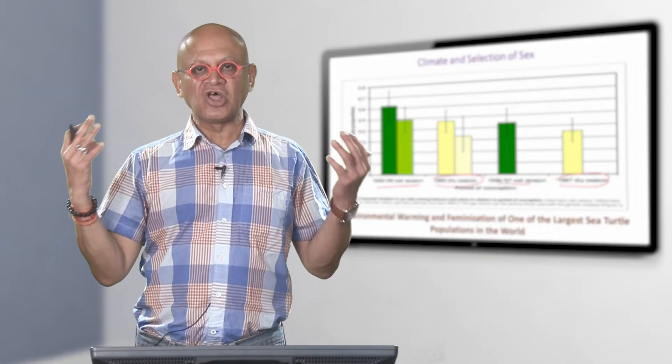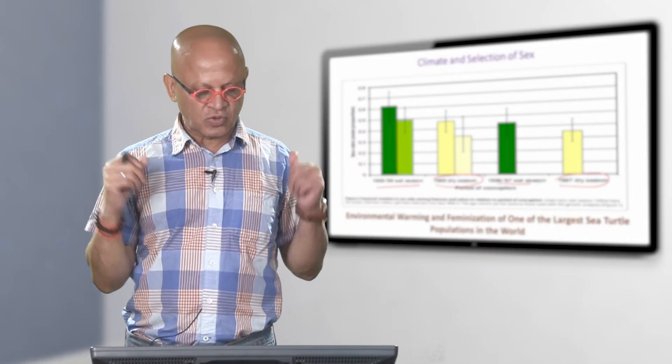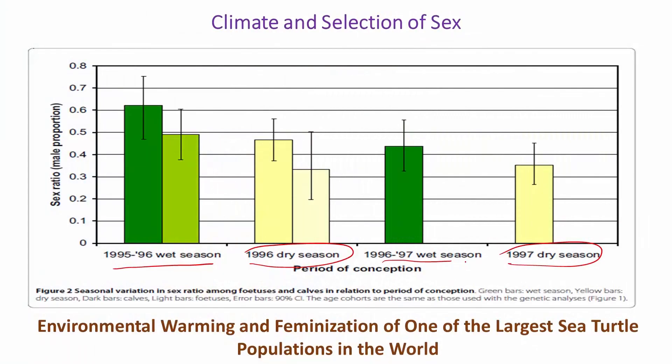These are often related to a phenomenon called El Niño but we do not have to worry about it now. This is showing essentially the ratio of male proportion for fetuses and young cows. And you can see that in the wet season the ratios are very different than in dry seasons.